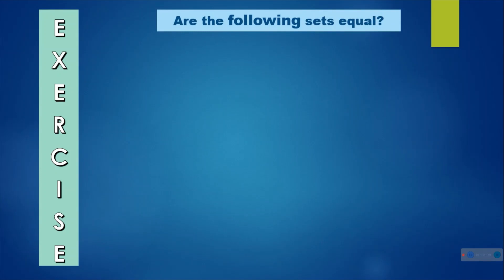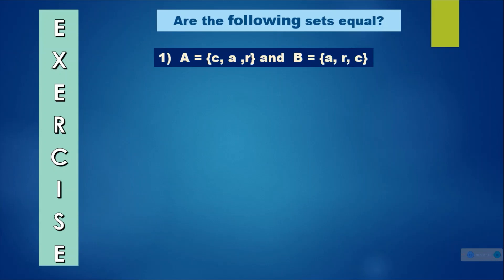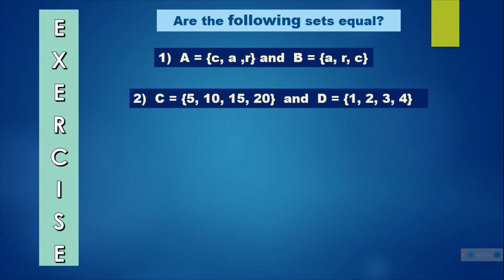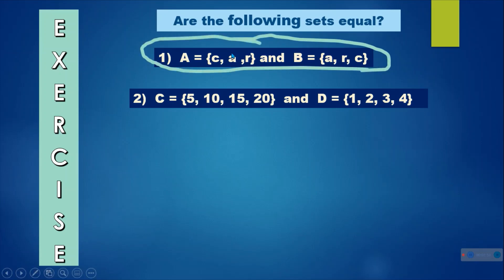Exercise: Are the following sets equal? Number 1: A is equal to {C, A, R} and B is equal to {A, R, C}. Number 2: C is equal to {5, 10, 15, 20} and B is equal to {1, 2, 3, 4}. The answer is number 1, because they have the same elements — C, A, and R appear in both sets. So they are equal sets.